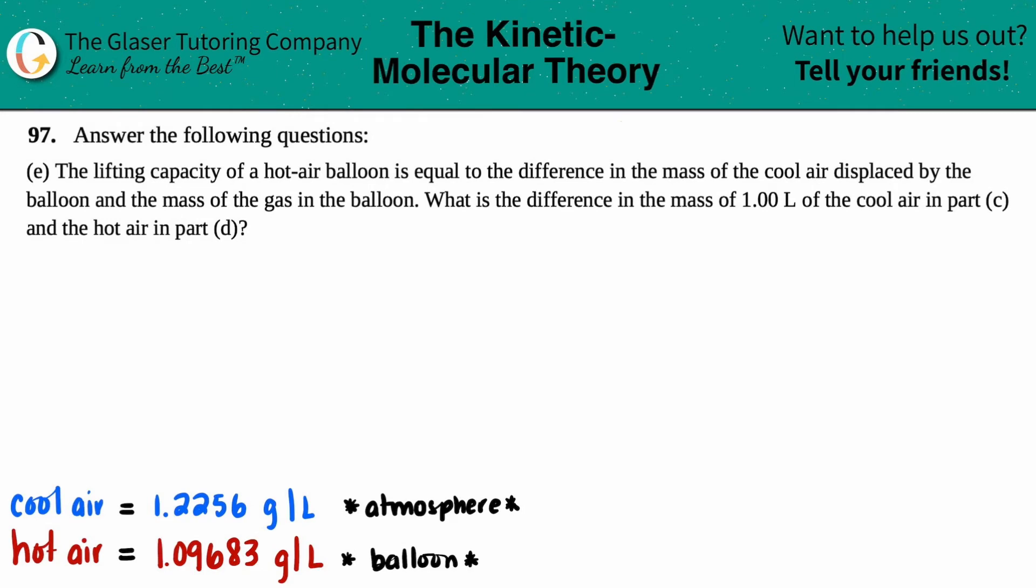Number 97, answer the following questions. We're at letter E out of the bunch. It says the lifting capacity of a hot air balloon is equal to the difference in the mass of the cool air displaced by the balloon and the mass of the gas in the balloon. What is the difference in the mass of 1.00 liters of the cool air in part C and the hot air in part D?